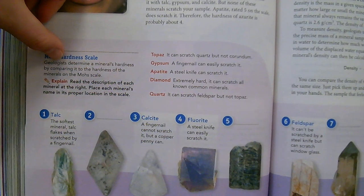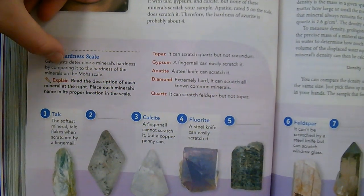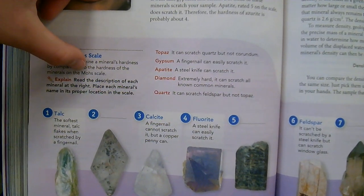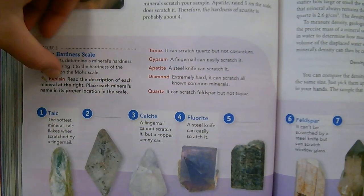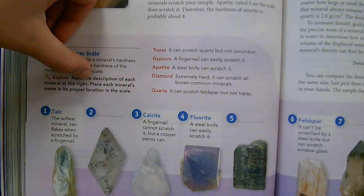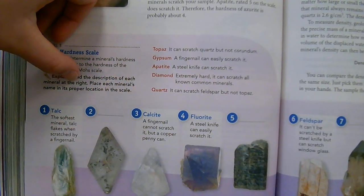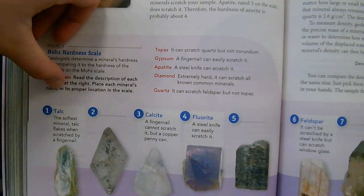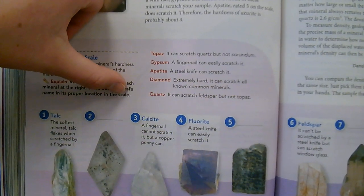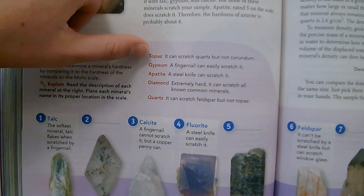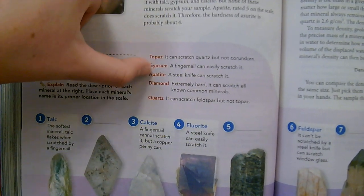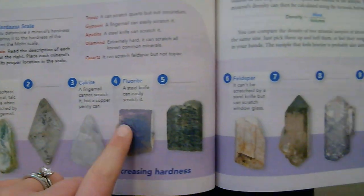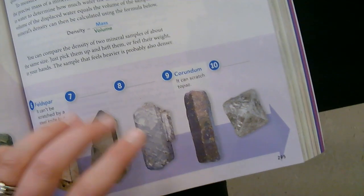Geologists determine a mineral's hardness by comparing it to the hardness of the minerals on the Mohs scale. Read the description of each mineral at the right, then place each mineral's name in its proper location in the scale.